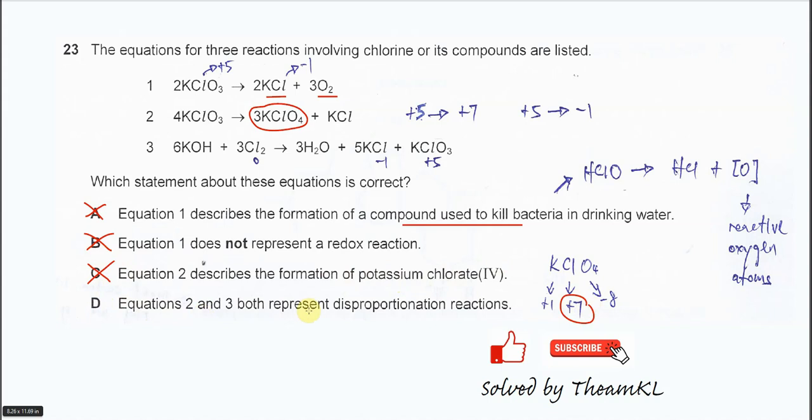For D, equation 2 and 3 both represent disproportionation reactions. So let's see whether it's correct or not. First you need to know what is disproportionation: it means the elements undergo oxidation and reduction at the same time.